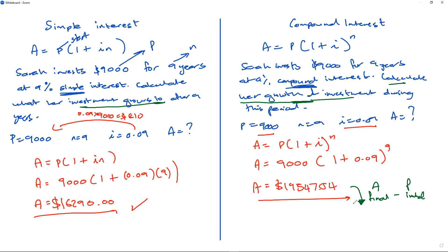It equals A minus P, which is going to be $19,547.04 minus $9,000. And you can see that's $10,547.04, which would be the growth of investment. So in 9 years, you earn that much.